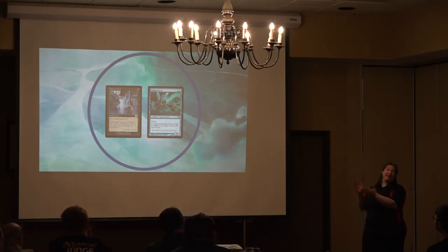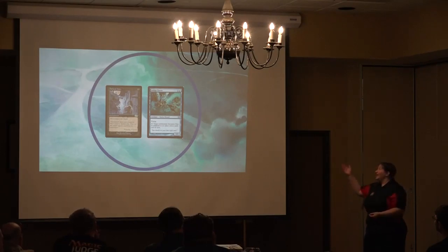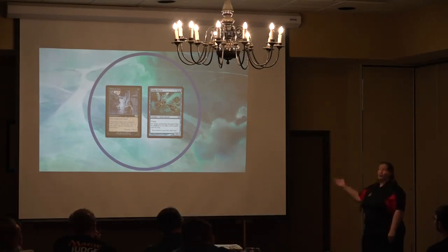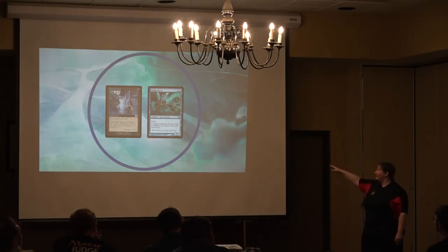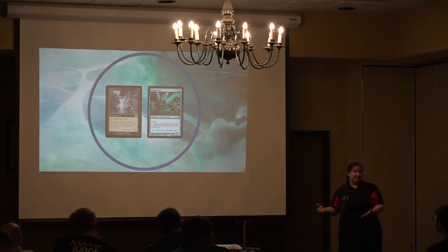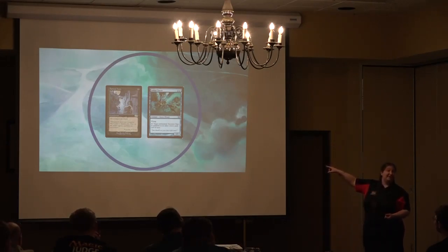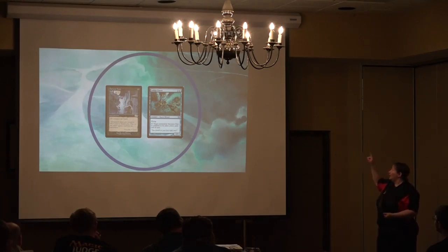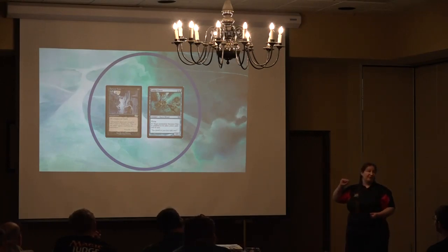Next we have color — pretty obvious one. All creatures are black. Target creature becomes blue in addition to its other colors until end of turn. We have the same thing here that we saw in the type layer, and in any layer really: if it does not say 'in addition to,' then it's going to supersede it and wipe it out. If it does say 'in addition to,' it's just going to add to it.